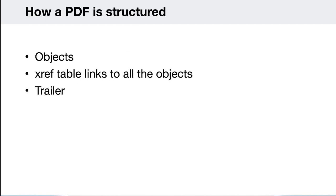So how a PDF is structured: we have objects, we have the XREF table, and we've got the trailer. The objects allow you to define images and text streams. The XREF table points to each of those objects in the document. And the trailer is at the end of the document and specifies the root object.